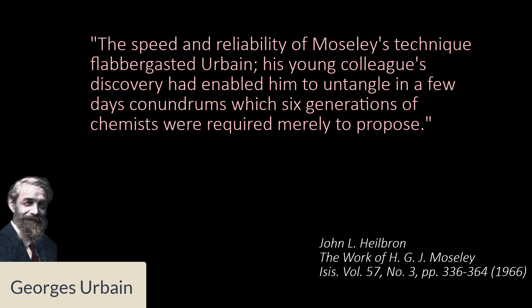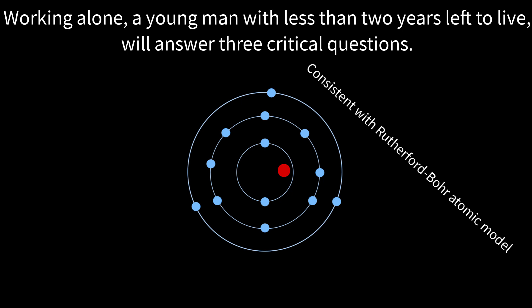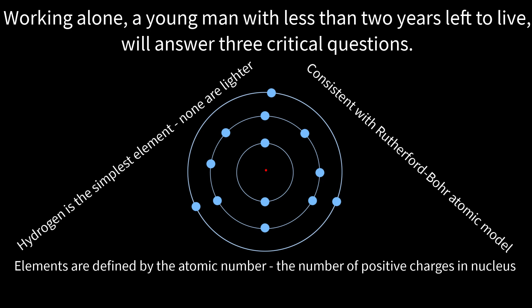Moseley had answered three questions vital for the future of science. His results were in accord with the Rutherford-Bohr atom, with a tiny positive nucleus orbited by electrons in defined, quantized energy shells. He proved that an element was defined by the number of positive charges in the nuclei of its atoms. Hydrogen had just one positive charge, and therefore there were no elements lighter than hydrogen.